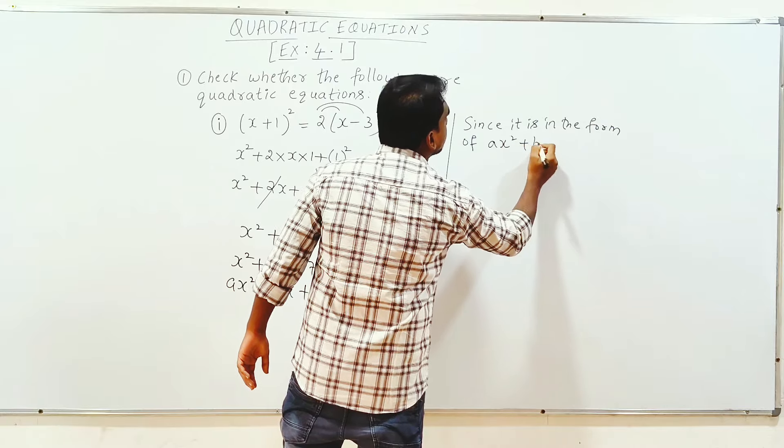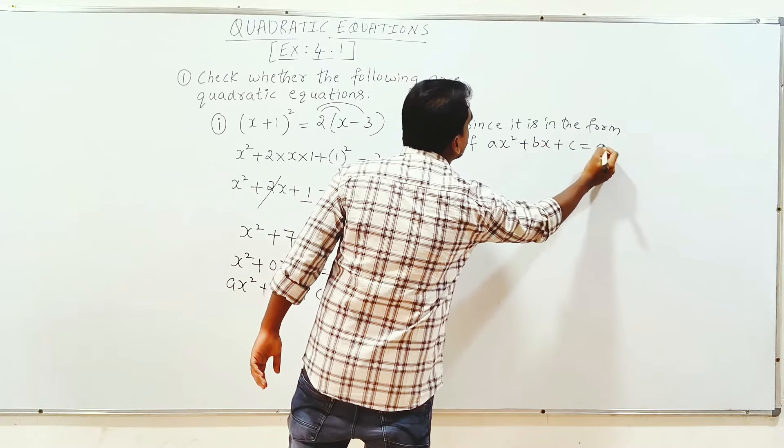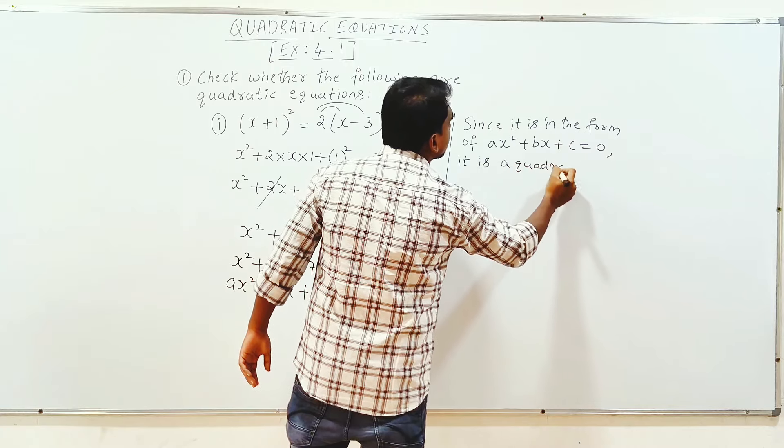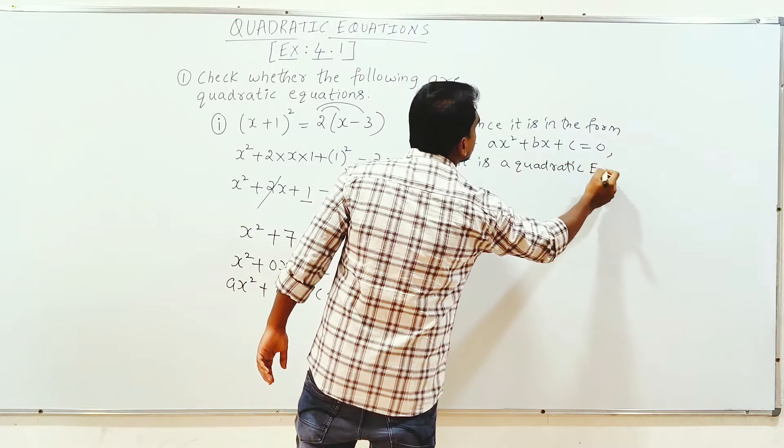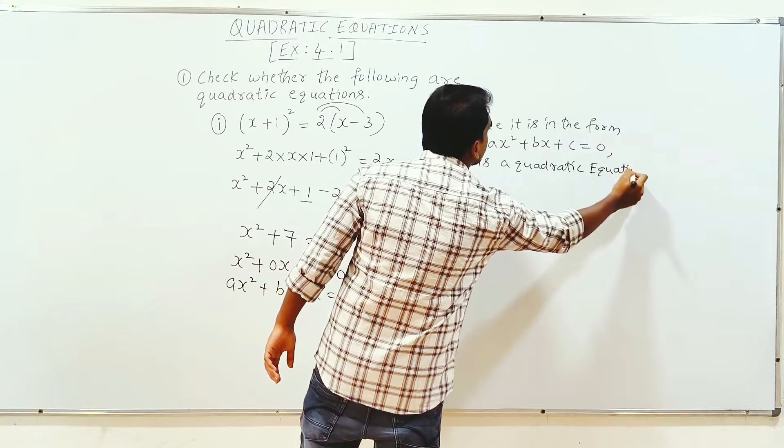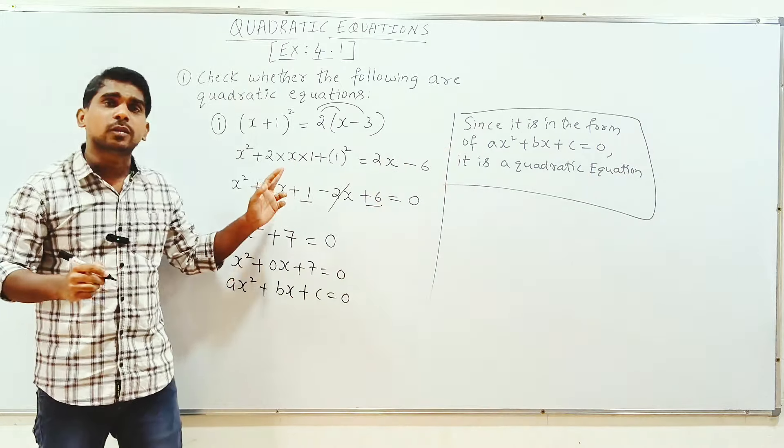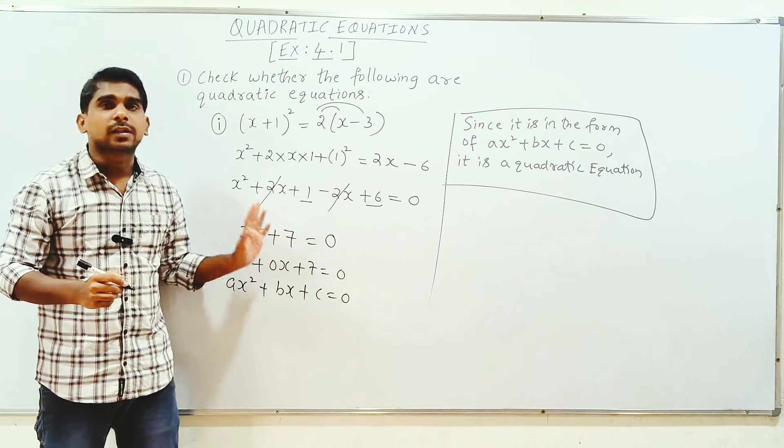x square plus 0x plus 7 is equal to 0. It is a quadratic equation. Highest power 2, is there a quadratic equation.